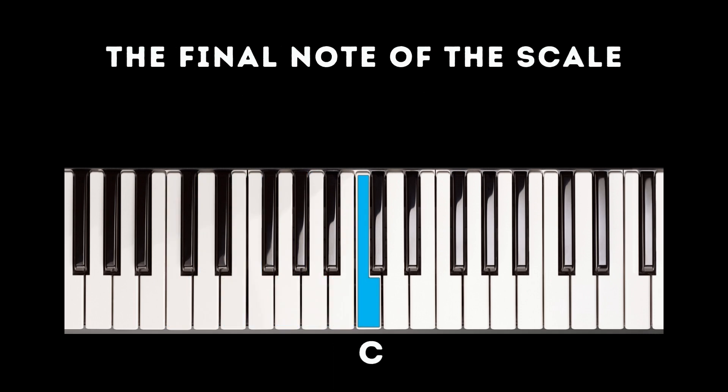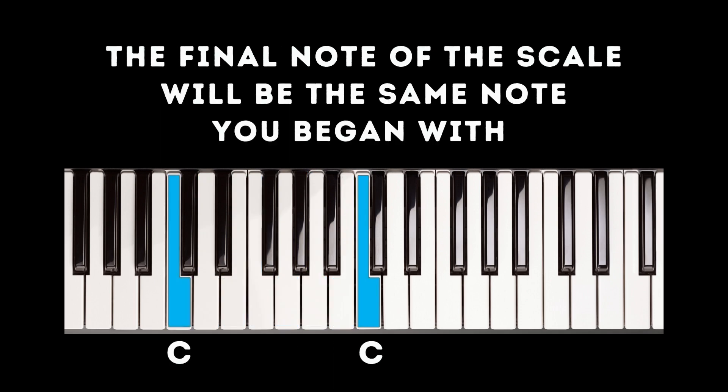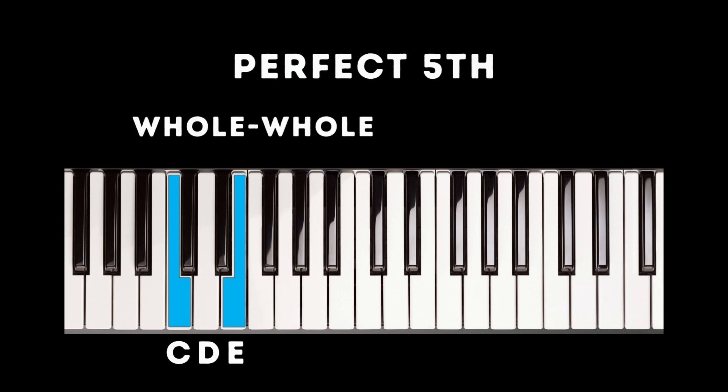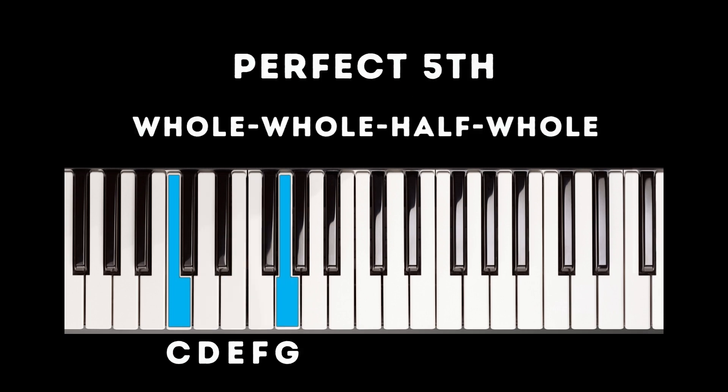The final note of the scale will be the same note you began with, only an octave higher. A perfect fifth is the interval from the beginning of your major scale up to the fifth note of your major scale. The perfect fifth can be achieved by ascending whole step, whole step, half step, whole step.